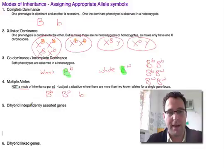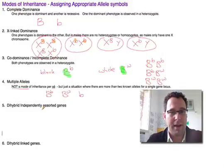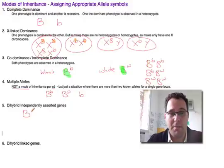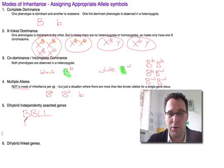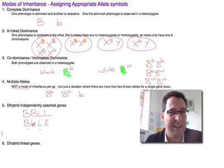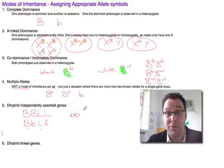For dihybrid inheritance, say we have rabbits with black or white hair and also long or short hair. A rabbit homozygous for black long hair would have the genotype BB LL — big B, big B, big L, big L. A heterozygous rabbit with big B, little b, big L, little l would also be black and long-haired, having the dominant allele at both loci. To get a white short-haired rabbit, we'd want one that is homozygous recessive at both gene loci.